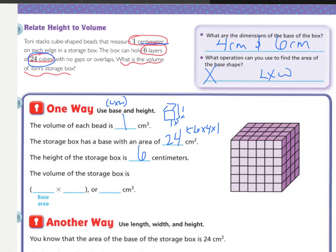The next step is to plug it in. So the base area was 24, and the height was 6, so 24 times 6 equals what's our volume? So 24 times 6 equals 144, and then it's cm cubed, so that's the volume.